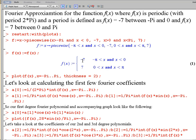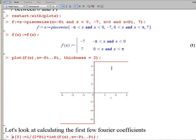So our function is negative 7 for x in between negative pi and 0, and positive 7 for x in between 0 and pi. So just to get a plot, we see that we have this square wave graph that has an amplitude of 7.